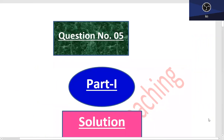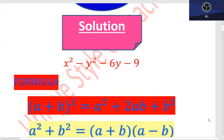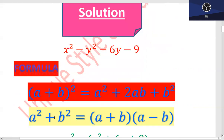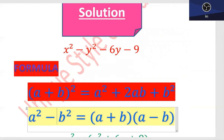Question No. 5, which is the last question of this exercise. Part 1: The solution is x square minus y square minus 6y minus 9. First of all, the formula is: (a+b)² = a² + 2ab + b². And the second formula is: a² - b² = (a+b)(a-b).